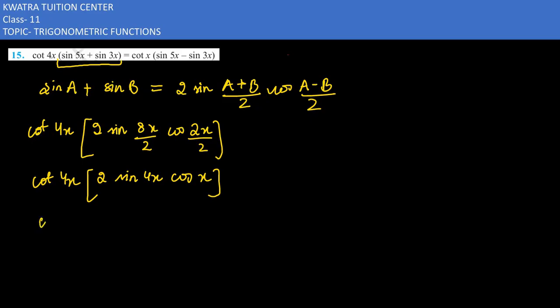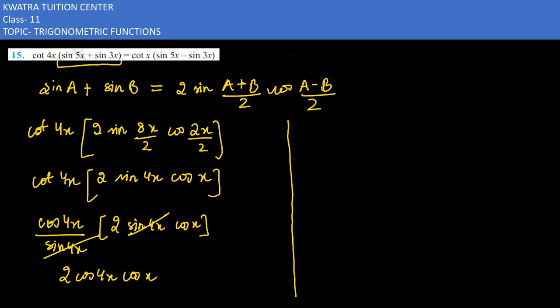We can write it as cos 4x over sin 4x. In division I have 2 sin 4x, cos x is there, sin 4x is there. So if we want to simplify it,